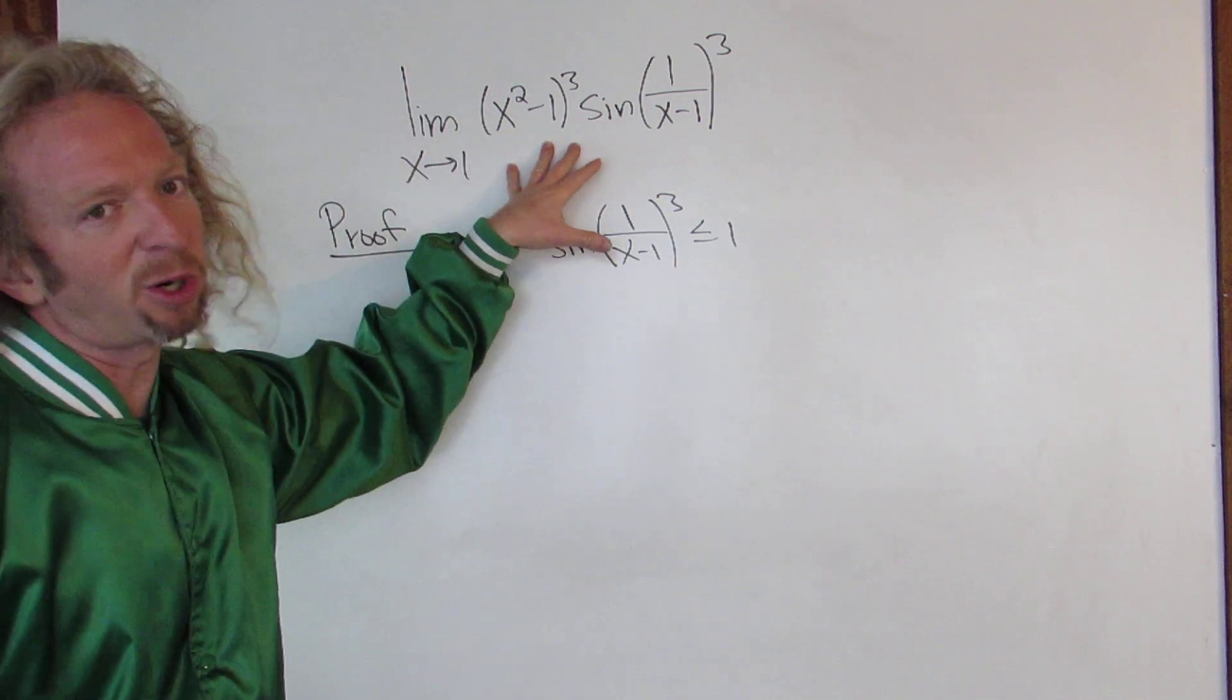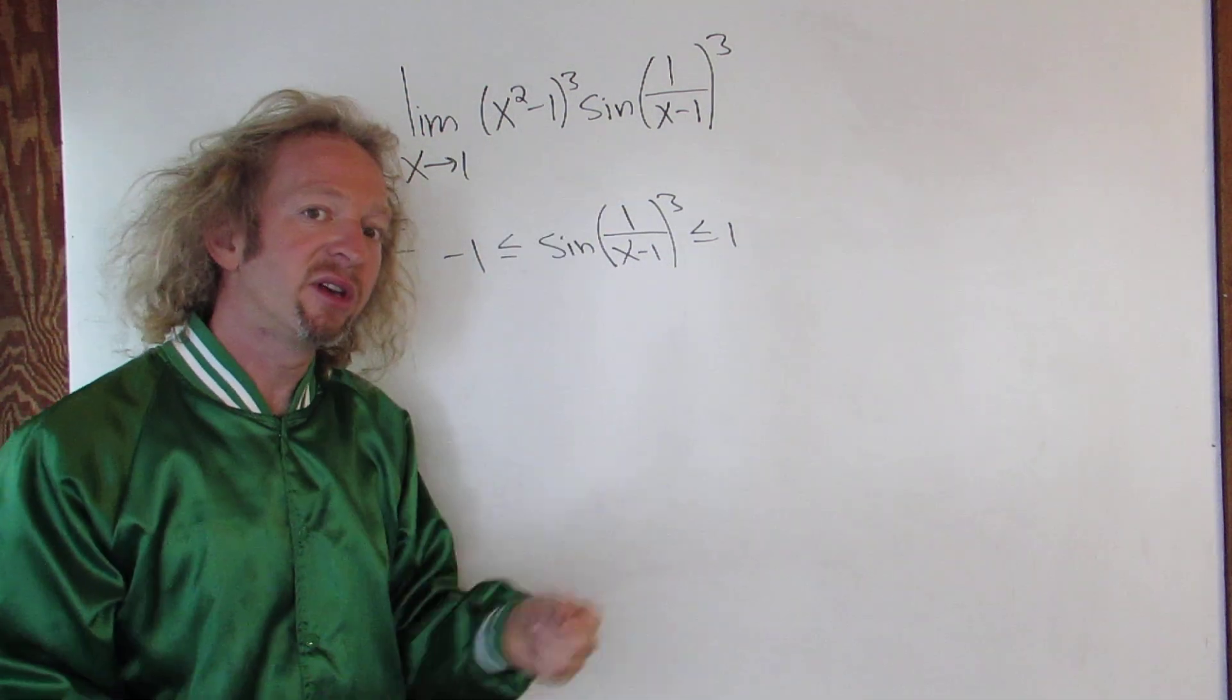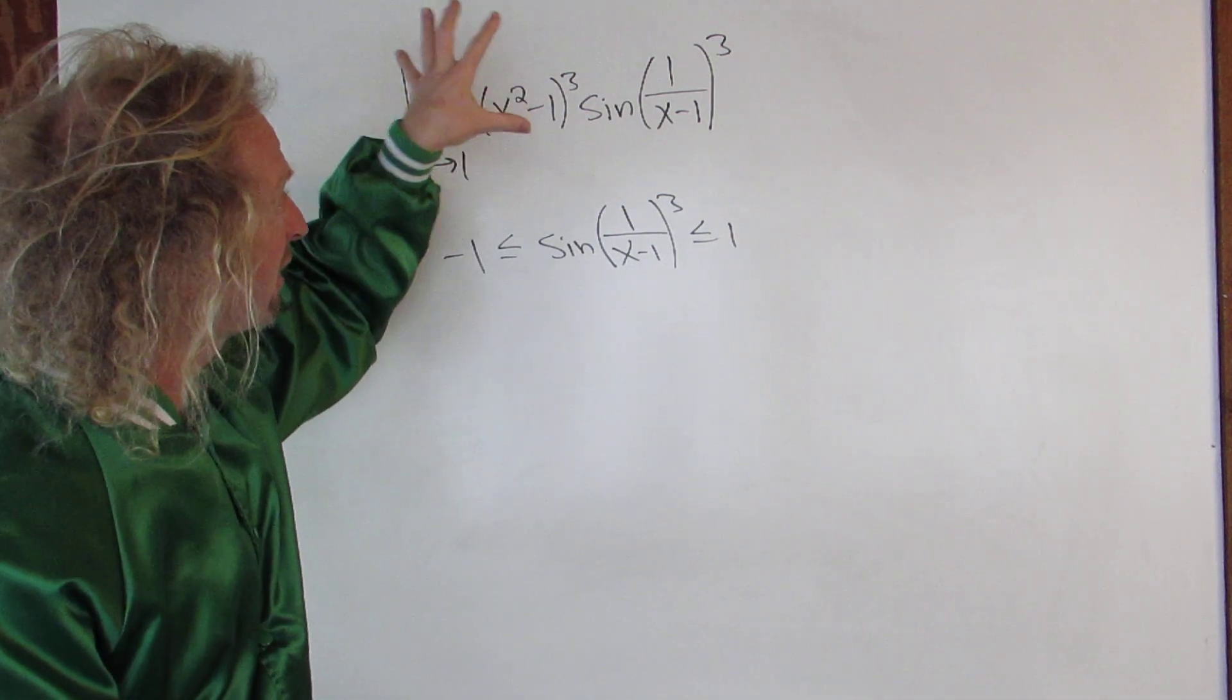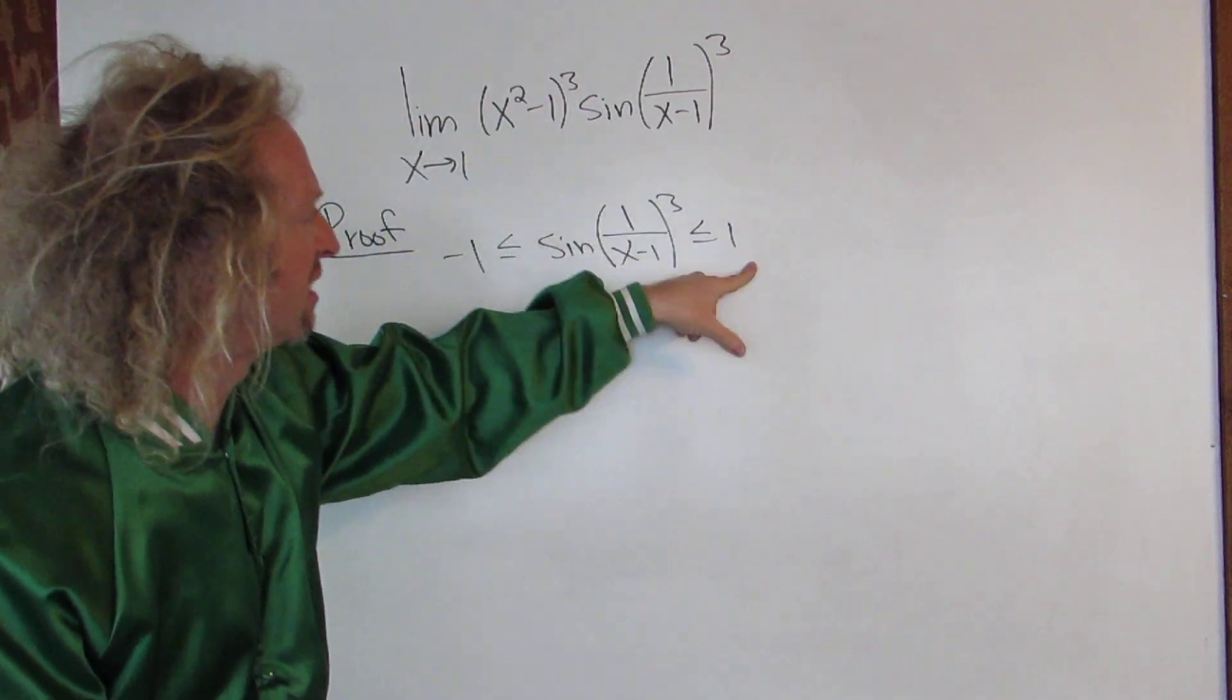Now this is not quite what we have in our problem. So what we're going to do is we have to make this look like this. So to do that we multiply everything by this. So we're going to multiply this by this, this by this, and this by this.